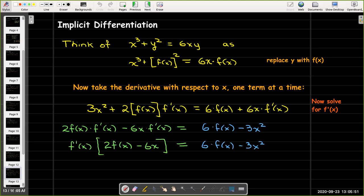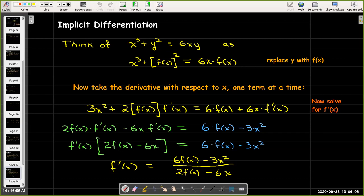Then I factor f'(x) out of the side of the equation that has the f'(x). And finally, divide both sides by the expression 2f(x) minus 6x.